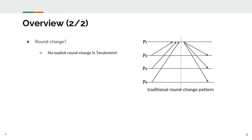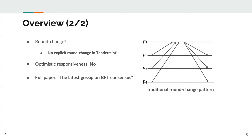However, this does not come for free. Tendermint sacrifices optimistic responsiveness. A protocol is optimistically responsive if, once the system becomes synchronous and a correct leader is in charge, the leader drives the system towards a decision in time depending only on actual message delays, not on the upper bound on message delays. Tendermint is not optimistically responsive, as a new leader must wait for delta time — where delta is the upper bound on message delays — to be sure it has not missed any relevant information from previous views. Full details are given in the paper "The Latest Gossip on BFT Consensus."